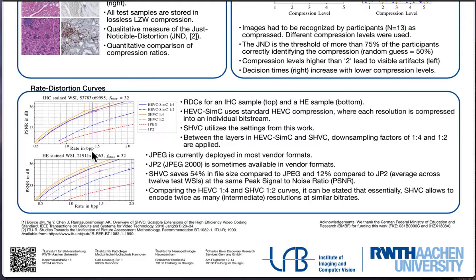Secondly, we have an evaluation with rate-distortion curves, which we use to judge the file sizes we end up with. We compare HEVC in a simulcast version — where every resolution layer is encoded individually — against HEVC using the interlayer prediction proposed here, and we compare both to JPEG and JPEG 2000. Our main finding is that the proposed SHVC settings save up to 54% of file sizes compared to JPEG, and still around 12% on average compared to JPEG 2000.